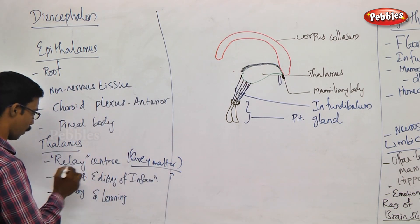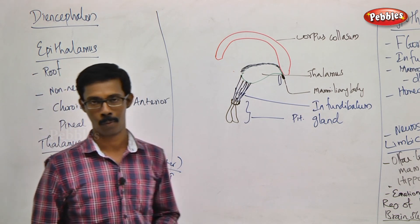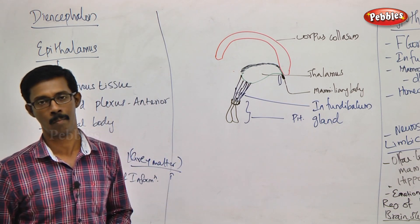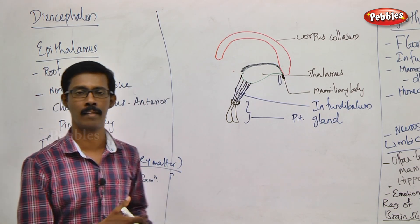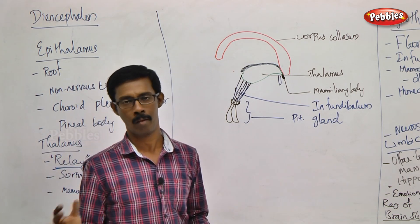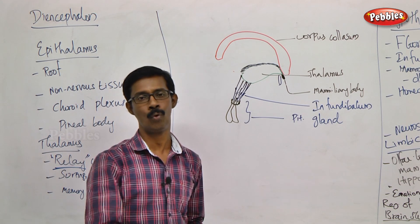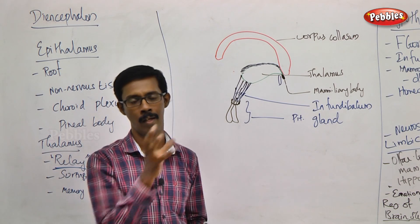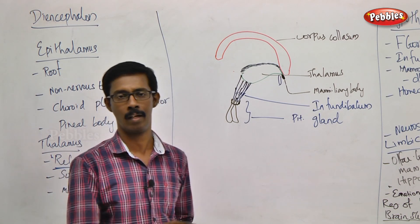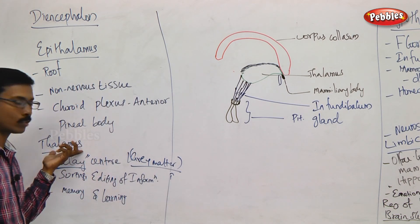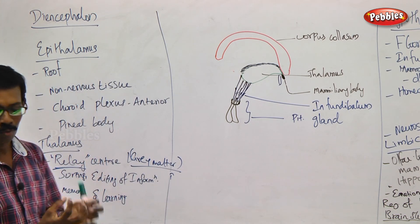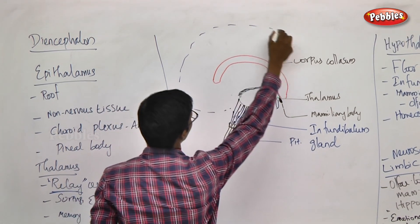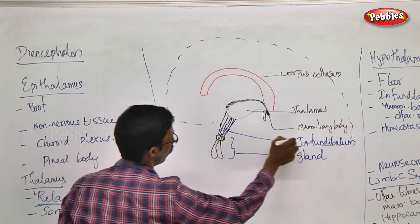What is the relay center? We use the signal relay system — like cell phones or TV systems. What does relay center mean in the brain? From the remaining body parts, the cortex region or forebrain sends signals and information through the relay. Here we have the cerebral hemispheres.